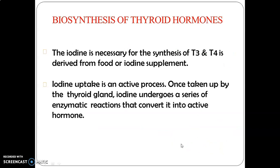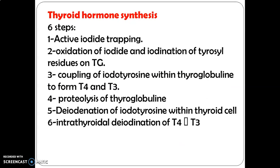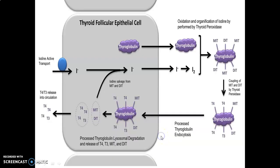The biosynthesis of thyroid hormone: iodine is necessary for the synthesis of T3 and T4, obtained from food or iodine supplements. Iodine uptake is an active process. Once taken up by the thyroid gland, iodine undergoes a series of enzymatic reactions that convert it into active hormones. The six steps are: (1) active iodine trapping, (2) oxidation of iodide and iodination of tyrosine residues on thyroglobulin, (3) coupling of iodinated tyrosine within thyroglobulin to form T4 and T3, (4) proteolysis of thyroglobulin, (5) deiodination of iodotyrosine, and (6) intrathyroid deiodination.